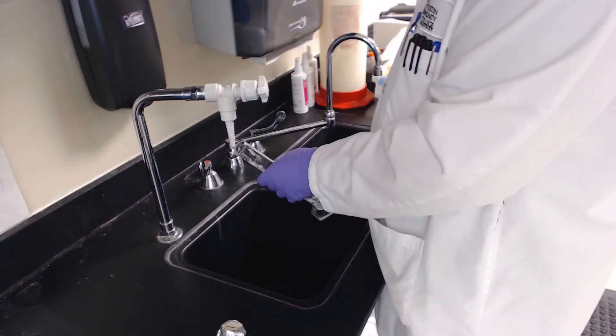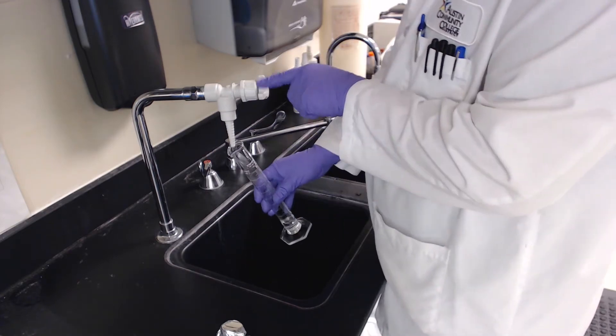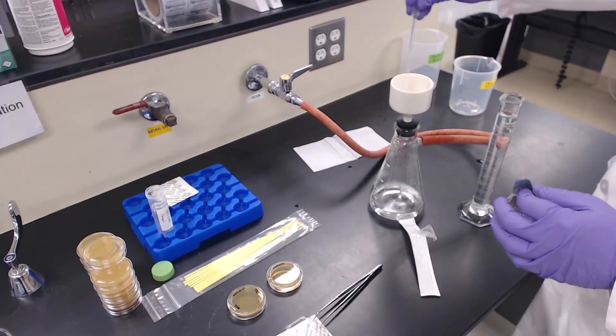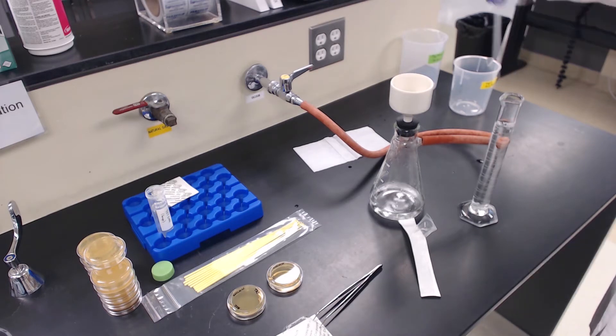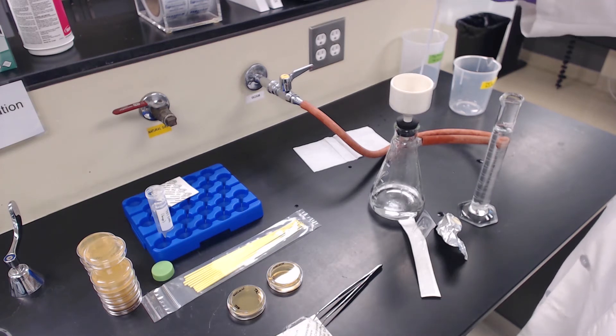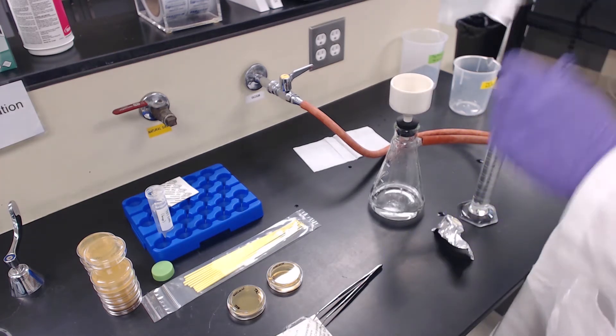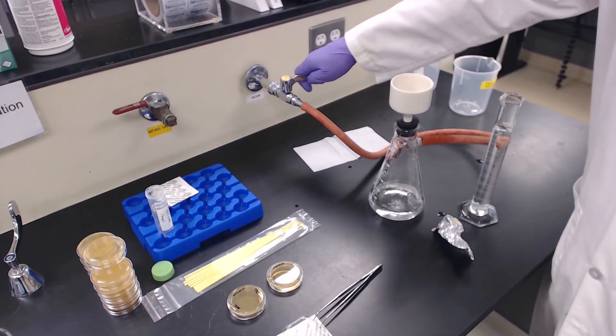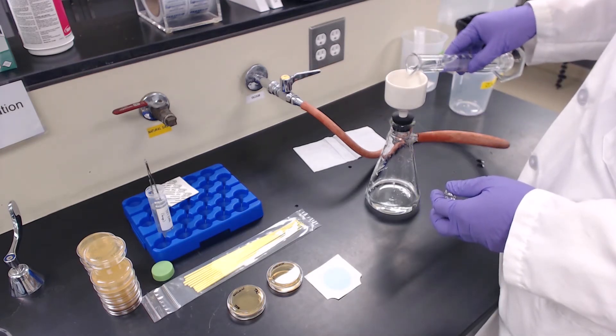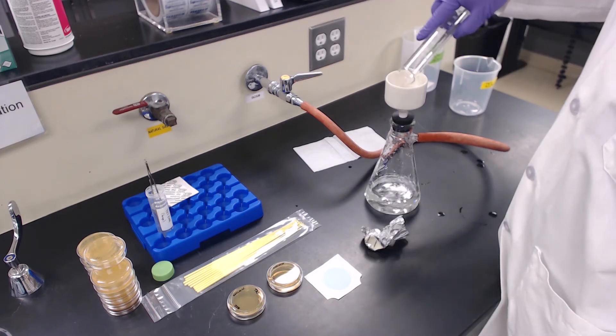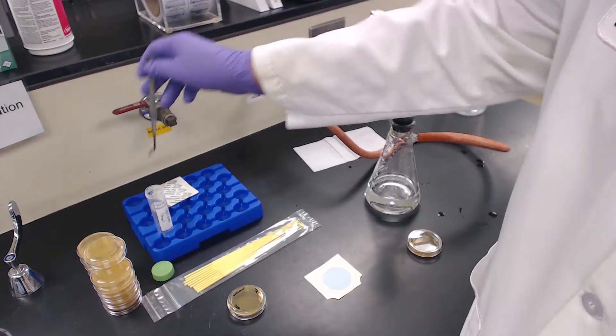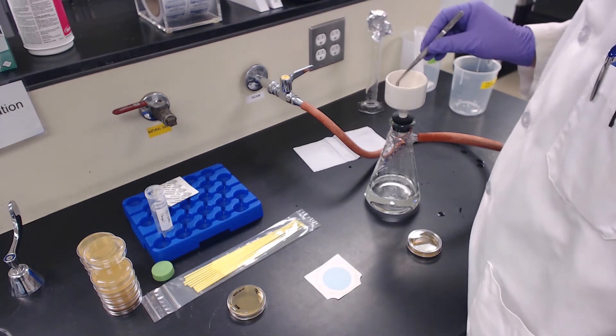Take your next water sample. Again, be sure to rinse the graduated cylinder three times with the sample before retrieving your 100 milliliters. Use some of the sample water to rinse the Buchner funnel to remove any of the previous sample water. You may quickly open and close the vacuum line to remove any residual water from inside of the Buchner funnel. Place a new gridded filter paper in the funnel and filter through the second water sample. Transfer the filter paper to the corresponding petri dish plate, grid side up.